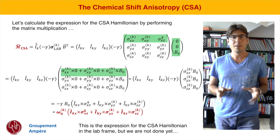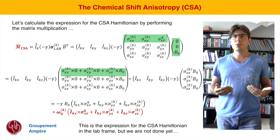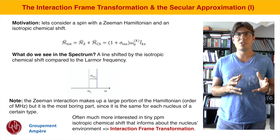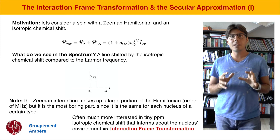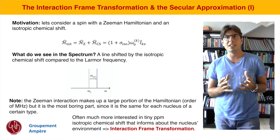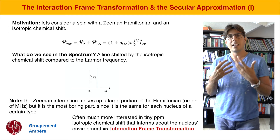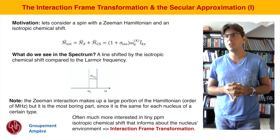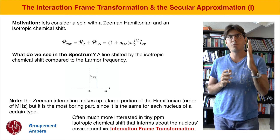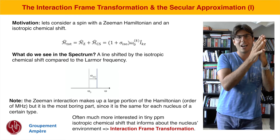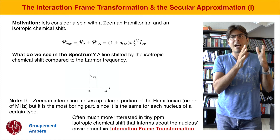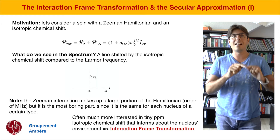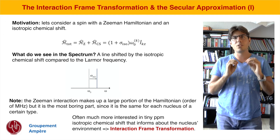However, the story hasn't finished here. This is the expression for our Hamiltonian in the lab frame, but what we often do is go into an interaction frame. To explain the motivation, consider a total Hamiltonian made up of the Zeeman Hamiltonian plus the chemical shift Hamiltonian for a spin, considering just the isotropic chemical shift. Intuitively, the spin would resonate at the Larmor frequency with a small extra shift given by the isotropic chemical shift — the quantity measured in ppm that tells us about the electronic environment of the spin. This is actually the really interesting part.